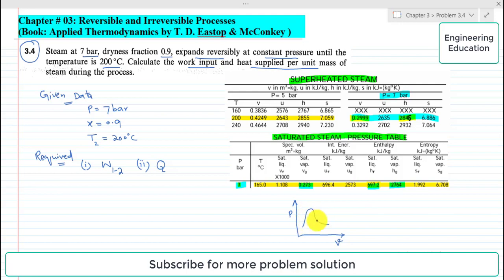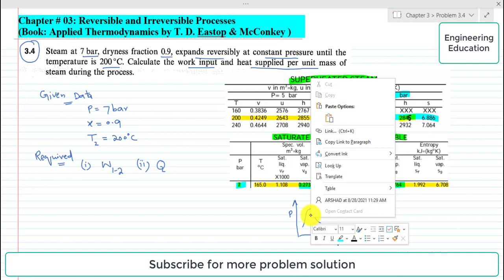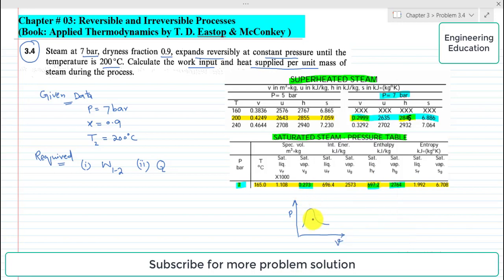This is the critical point. This is the superheated region, this is the mixture region, and this is the compressed liquid or subcooled region. So initially, the state of the steam is inside this dome.